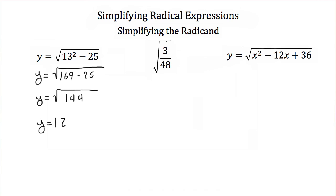Here we have the square root of 3 over 48. Now this is difficult to take the square root of, but I can reduce this fraction, 3/48, into 1/16. And I can take the square root of 1/16 — that's just 1/4. So by simplifying my fraction underneath the square root sign, I was eventually able to take the square root of it.